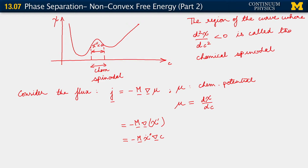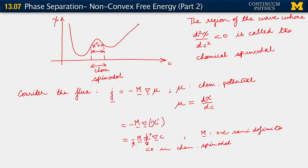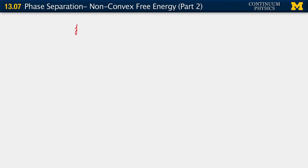What happens in the chemical spinodal? Chi double prime is less than zero in the chemical spinodal. And we know that M is positive semi-definite. What this means is that the fact that chi double prime is less than zero essentially negates the other negative sign. As a result, J becomes sort of proportional to the gradient of c.